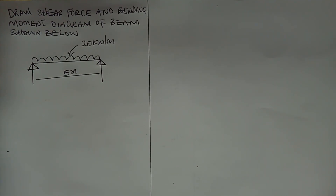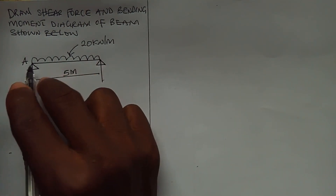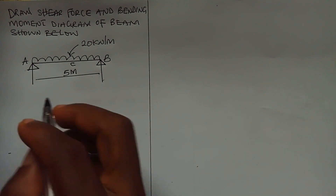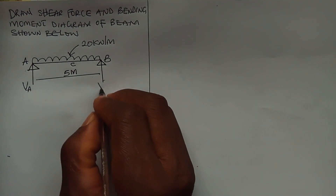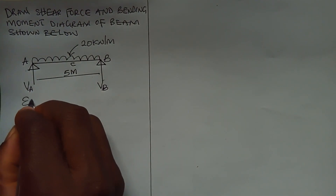Thank you for stopping by again in this YouTube channel. Today we want to talk about the shear force and bending moment diagram for an assembly supported beam carrying a uniformly distributed load. To start with, we're going to label this beam here as A, this side B, and the center C. This point will be our VA, or RA as the case may be.